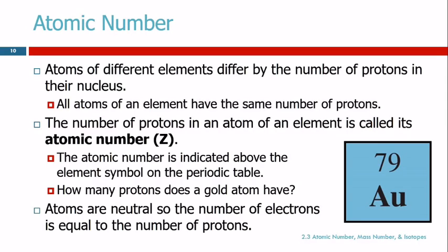Okay, atomic number, mass number, and isotopes. So Dalton said that atoms of different elements are different from each other. And what makes them different is the number of protons in their nucleus. So we just learned about the nucleus, there's protons and neutrons in there. The number of protons in the nucleus is what identifies an atom as belonging to a particular element.